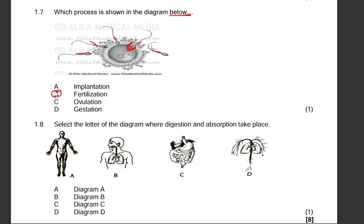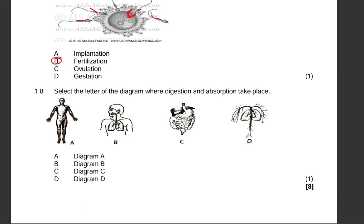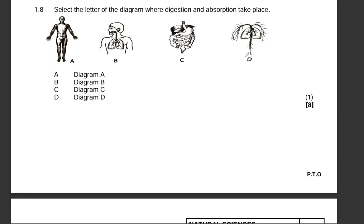Not gestation, because remember that's the period of pregnancy. Ovulation, this is when an egg gets released out of the ovary. Implantation, this is when the blastocyst gets implanted in the uterine wall to confirm pregnancy.